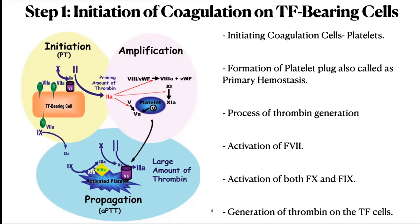Long-term hemostasis requires that the platelet clot be stabilized by means of fibrin from the action of thrombin. The process of thrombin generation is initiated by tissue factor-bearing cells which are exposed at the site of injury. The factor VIIa and tissue factor complex catalyze the activation of both factor X and factor IX. Factor Xa formed on the tissue factor-bearing cell interacts with its cofactor Va to generate a small amount of thrombin on the tissue factor-bearing cells.